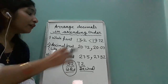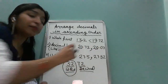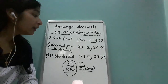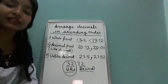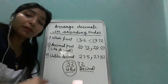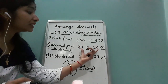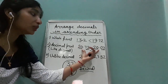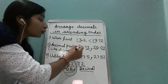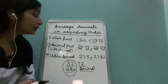Now, if you have two decimal numbers where the whole part is the same, how will you compare? Then we will go to the decimal part. Here we have two decimal places and here also two decimal places, so these two numbers are like decimals.